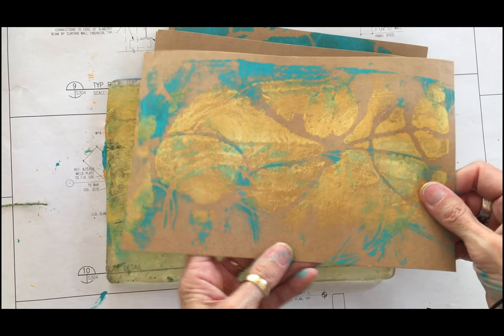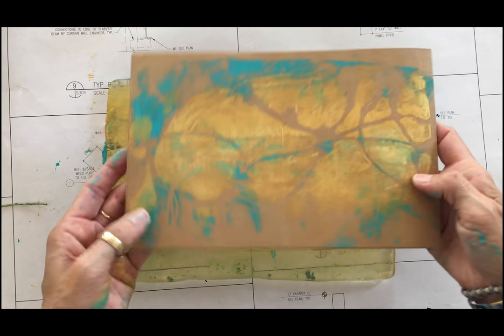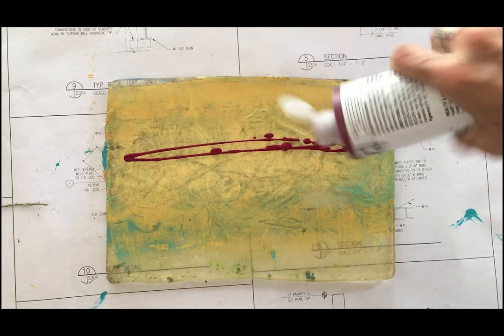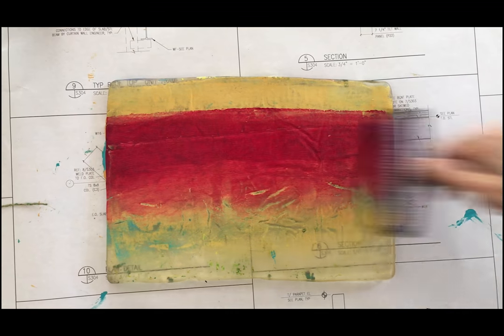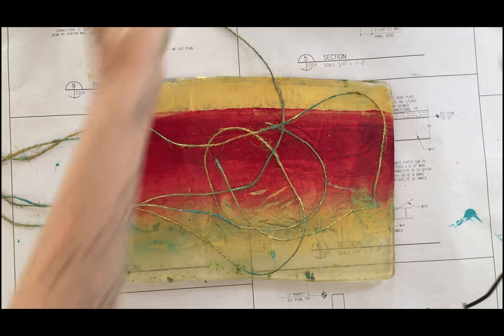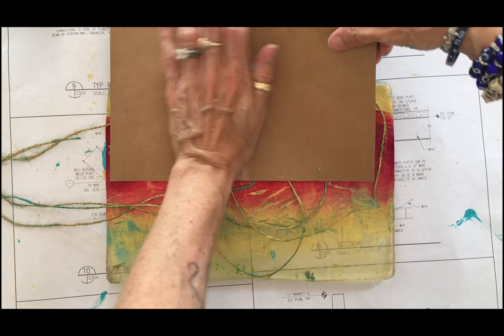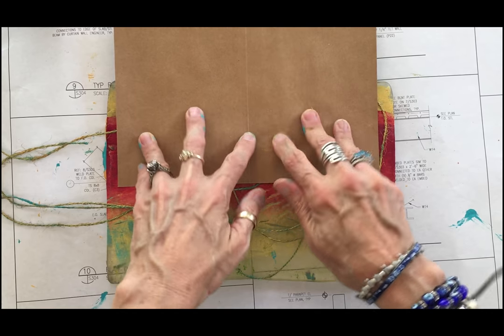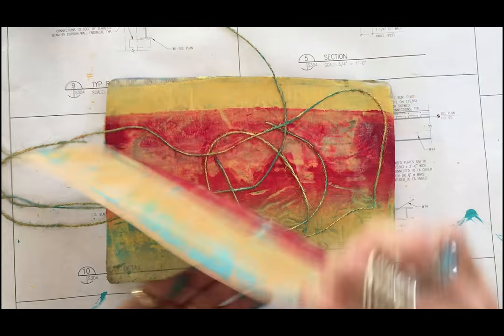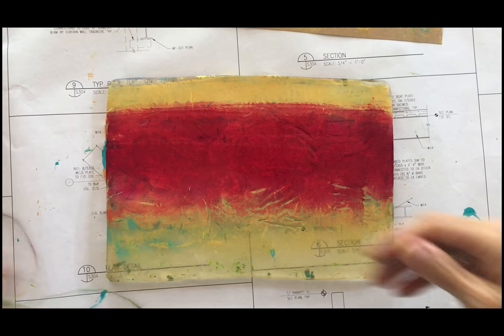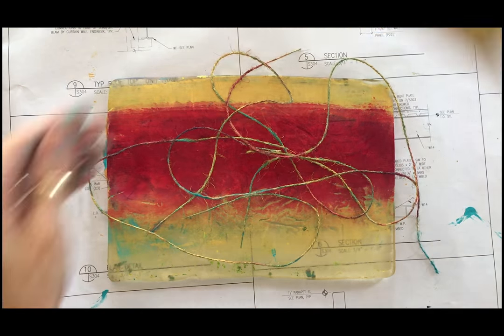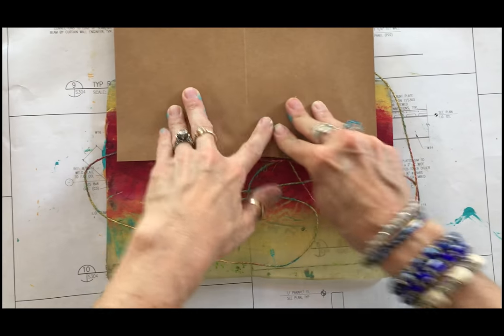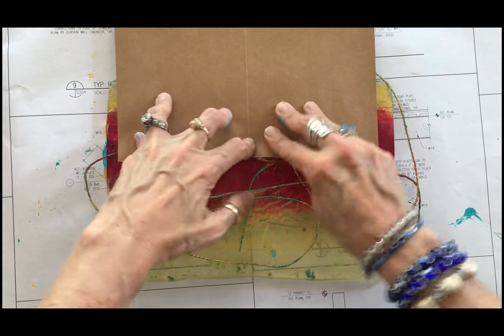Our next layer is going to be the quinacridone magenta. Again, I'm going to spread a thin layer out on the plate that I have not cleaned. I'm going to brayer it into a strip, lay the jute string into the paint, and take my prepared card and press on this end. I'm controlling where that color goes by the pressure that I'm applying, but it is still a haphazard kind of random effect. As I lay the string in random patterns into the paint, I'm also going to take the card and just do it on one edge.